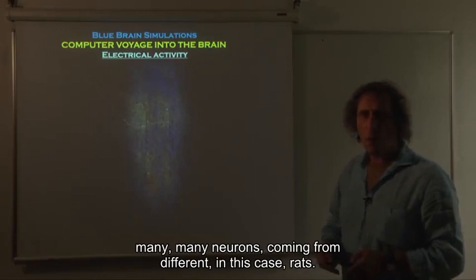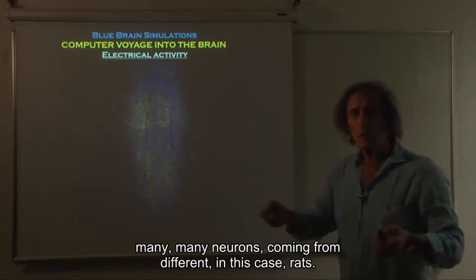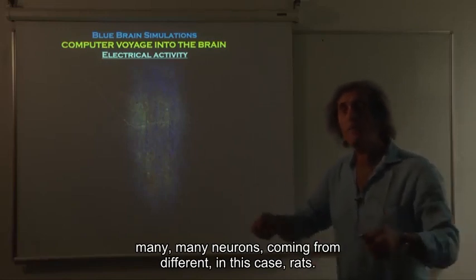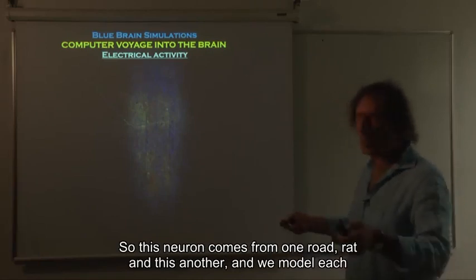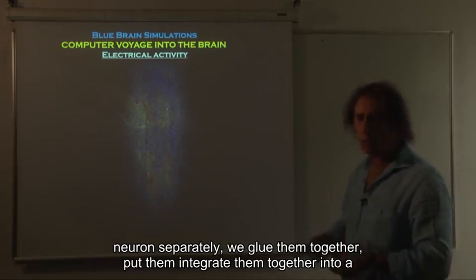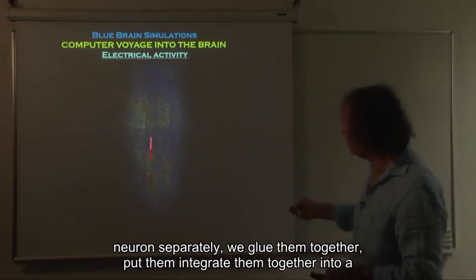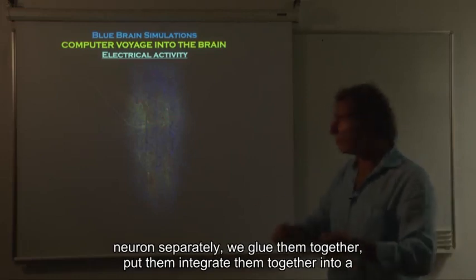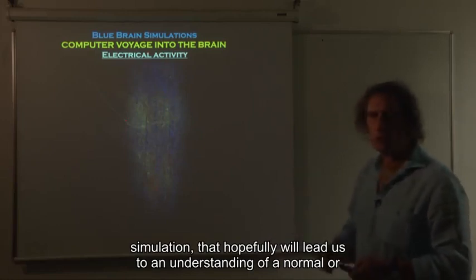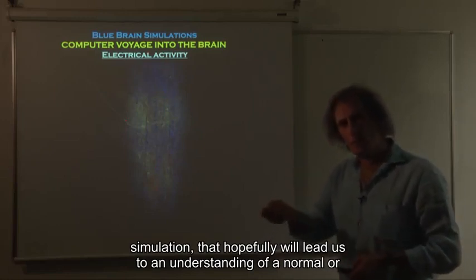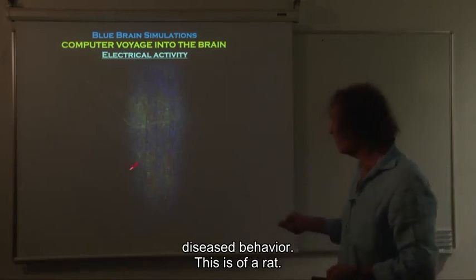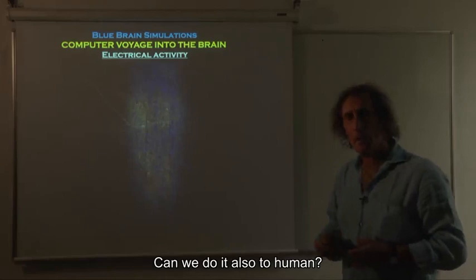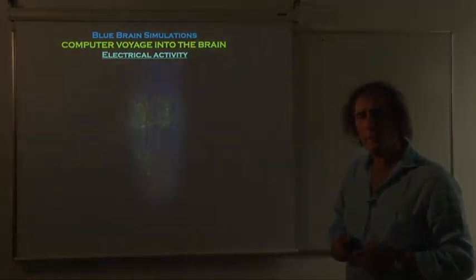And of course this column is a column composed from many, many neurons coming from different, in this case, rats. So this neuron comes from one rat and this another. And we model each neuron separately. We glue them together, put them, integrate them together into a simulation that hopefully will lead us to an understanding of a normal or diseased behavior. This is of a rat. Can we do it also to humans?